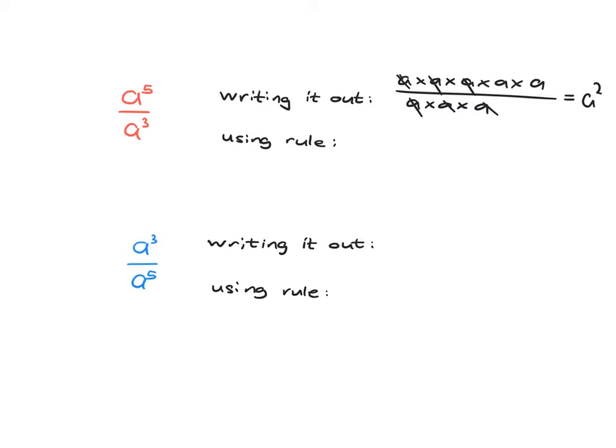Then after we'd done that for a while, we saw the rule that basically said: you've got 5 a's on the top, 3 on the bottom, and so when you cancel out you're going to be left with 5 minus 3 a's. In other words, you could do it quite quickly by saying a to the 5 minus 3, which is a squared.